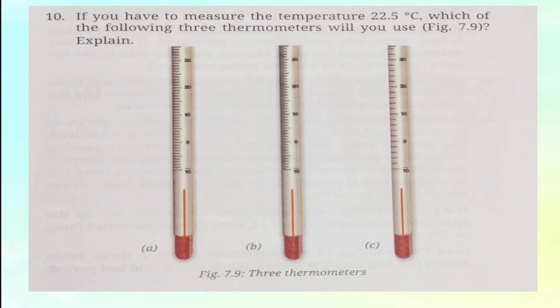Tenth question: If you have to measure a temperature of 22.5 degree Celsius, which of the following three thermometers shown in figure 7.9 will you use? The correct answer is thermometer B.